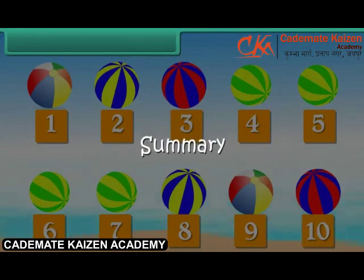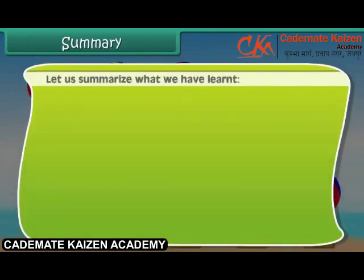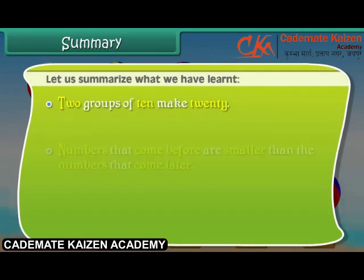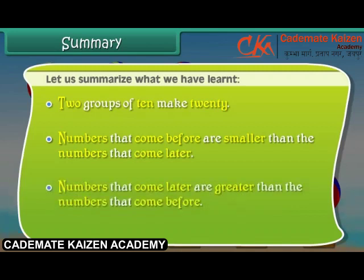Summary. Let us summarise what we have learnt. Two groups of ten make twenty. Numbers that come before are smaller than the numbers that come later. Numbers that come later are greater than the numbers that come before.